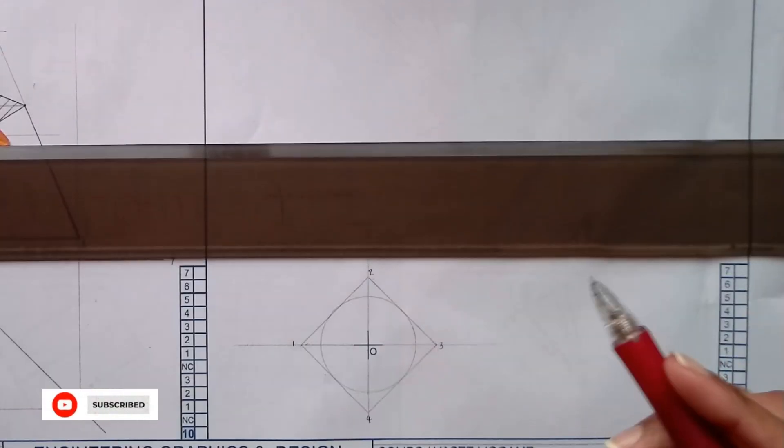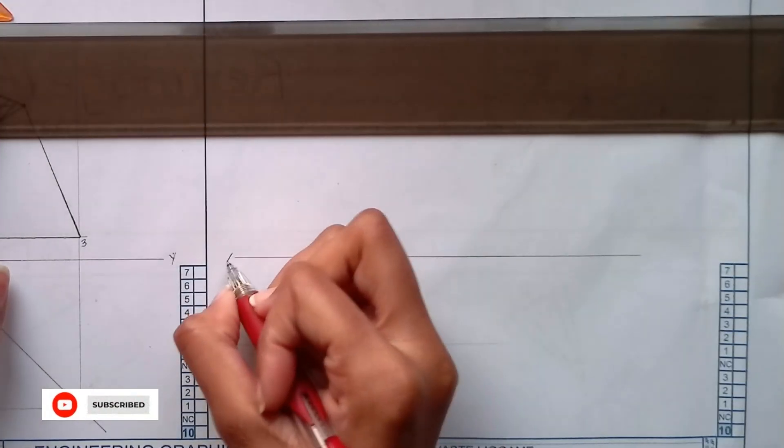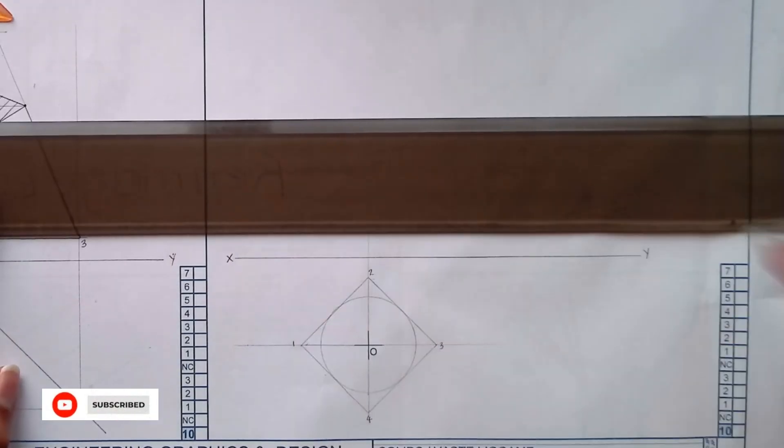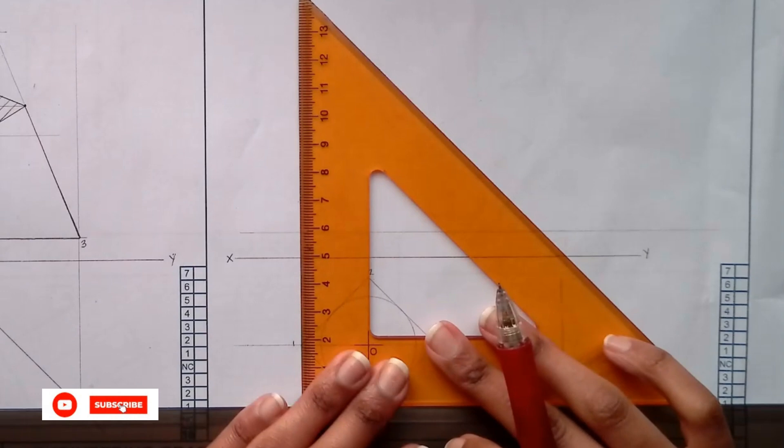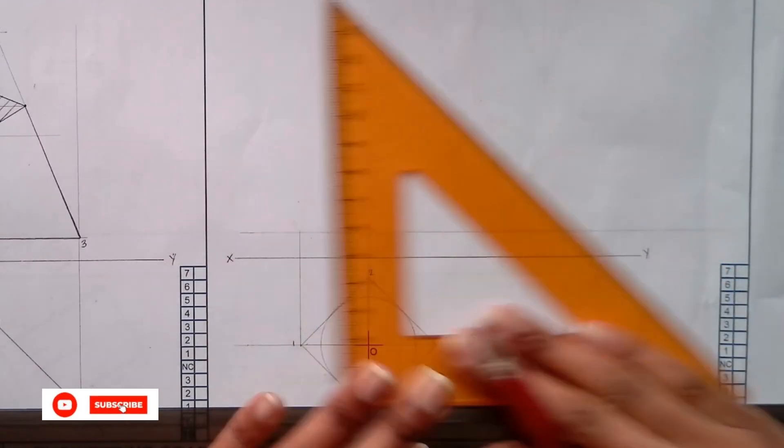Once again, you measure your 10 up. Get your xy, your original xy or your given xy, 10 up again where you need to start. Then you just have to project your points up.